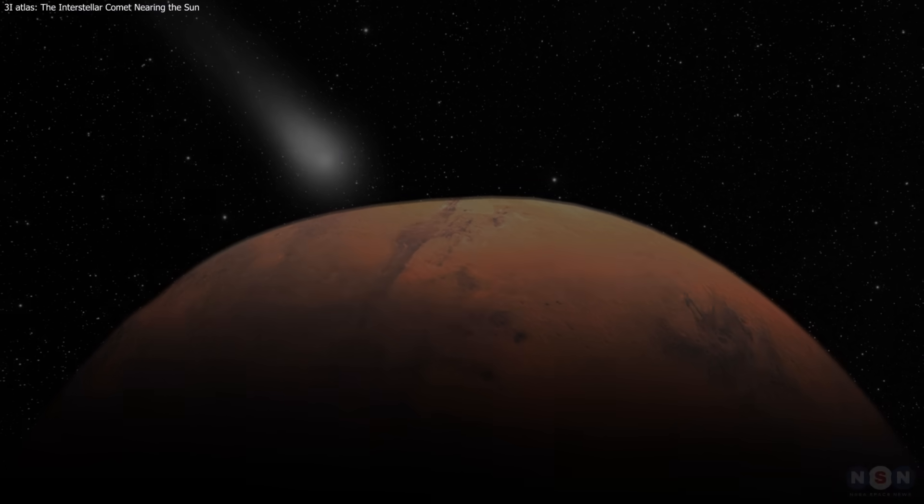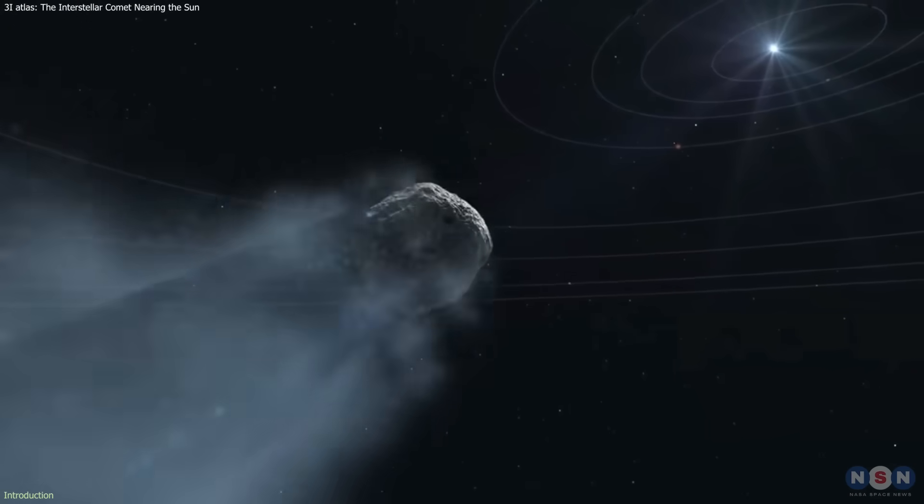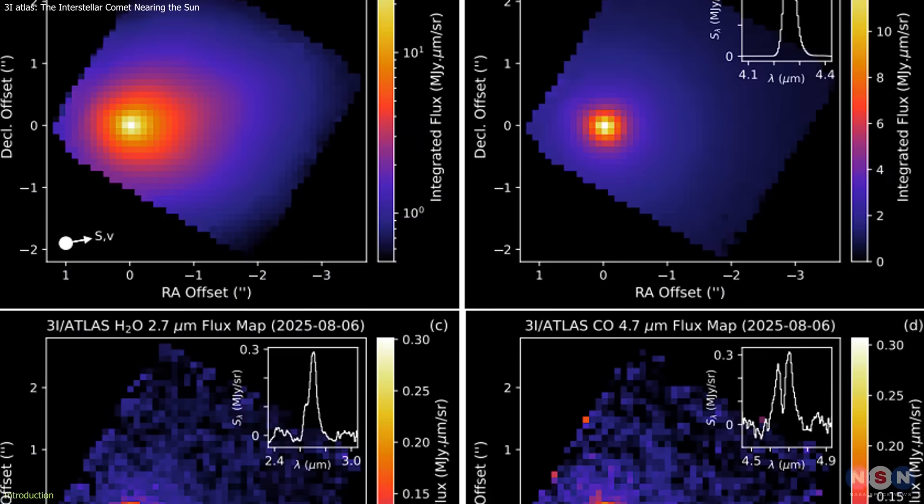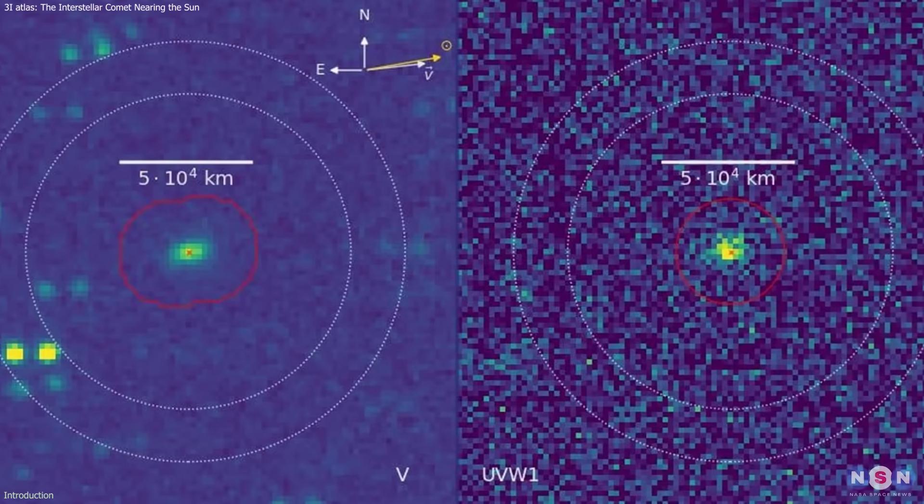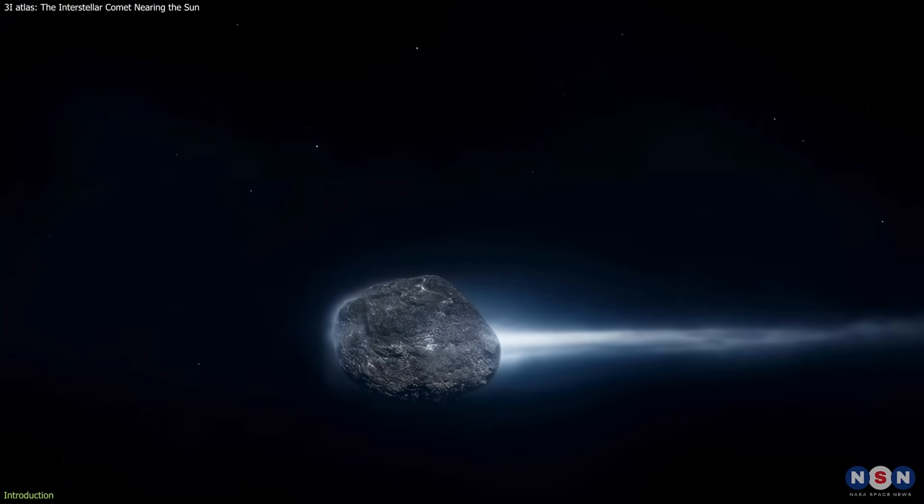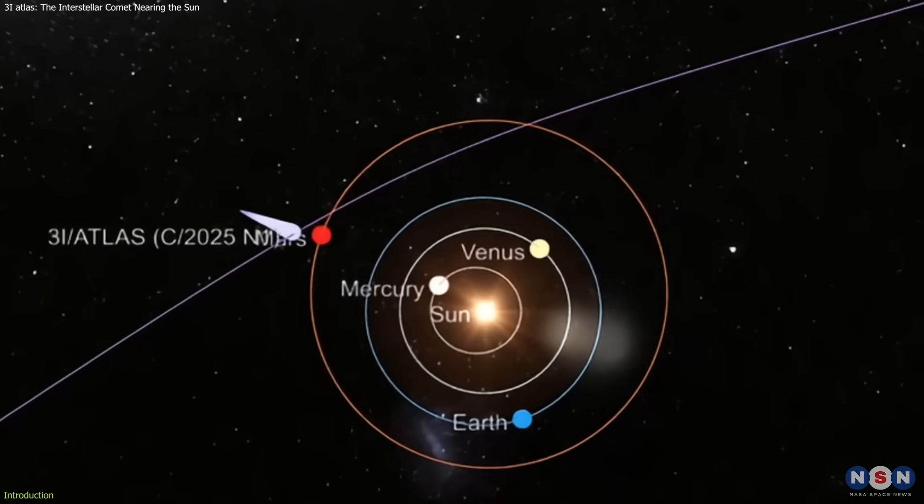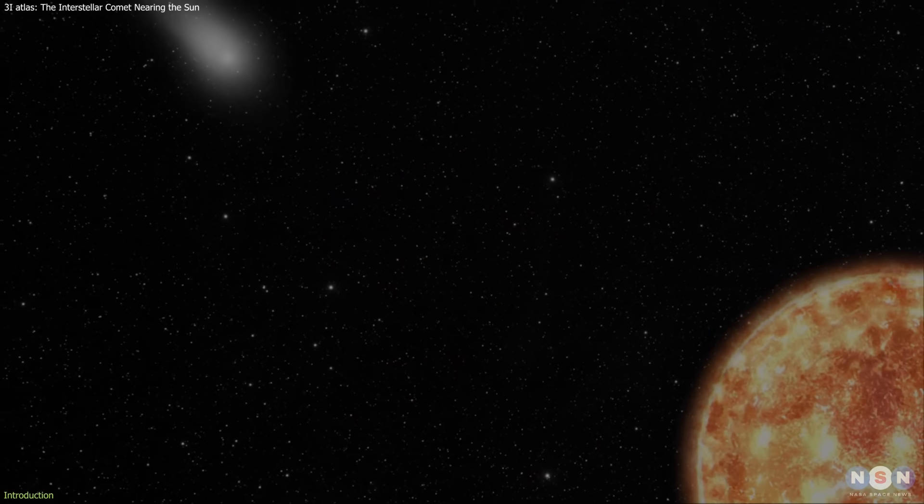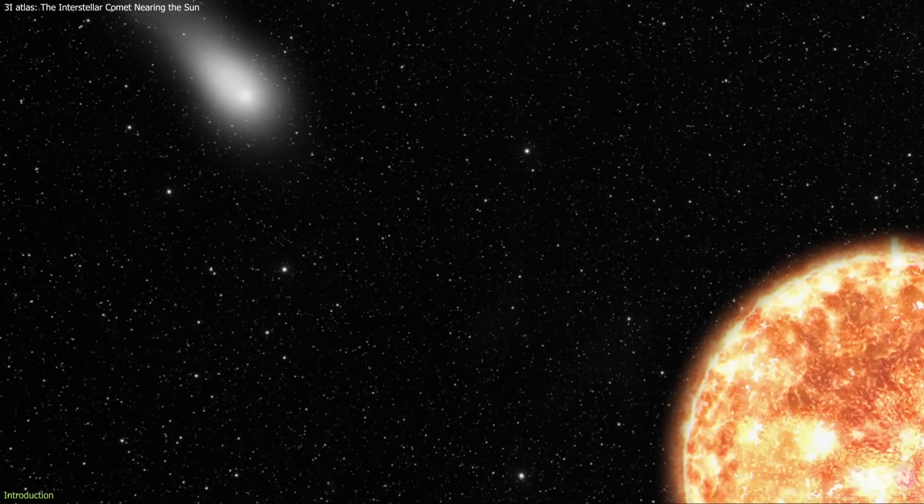3i Atlas has passed Mars and is now racing toward the Sun, entering a critical stage in its interstellar journey. Early observations have already revealed unusual signs: a strong release of water far from the Sun and a CO2-rich coma, both pointing to a very different composition from typical solar system comets. As it approaches perihelion later this month, astronomers are closely monitoring its behavior under rising solar heat and radiation.